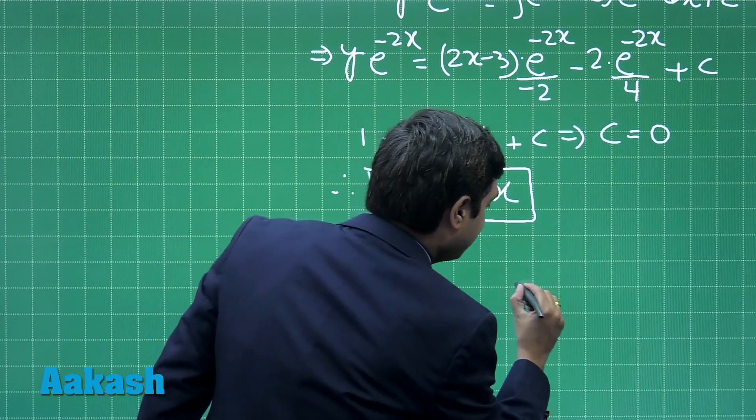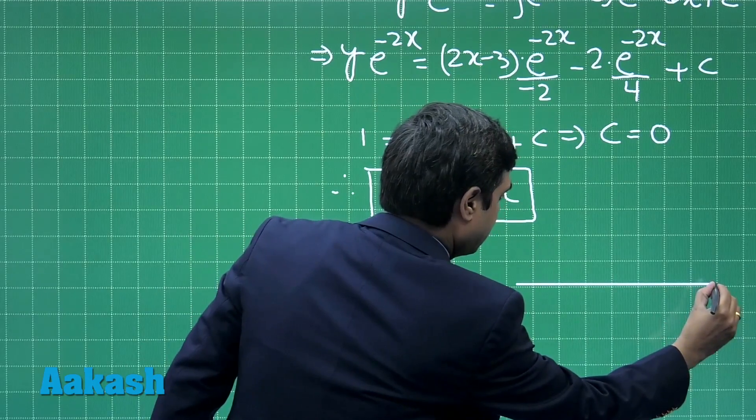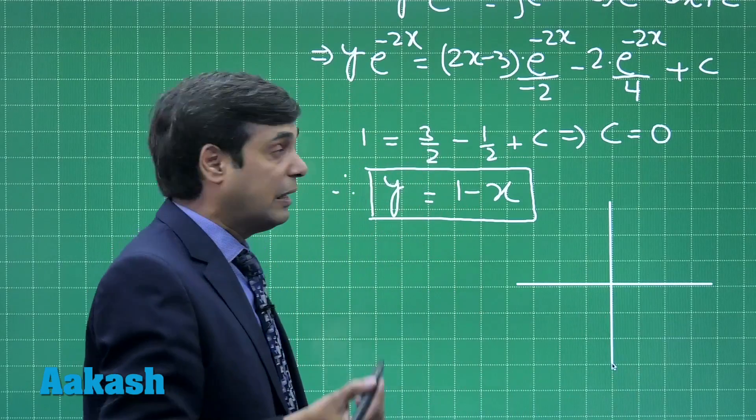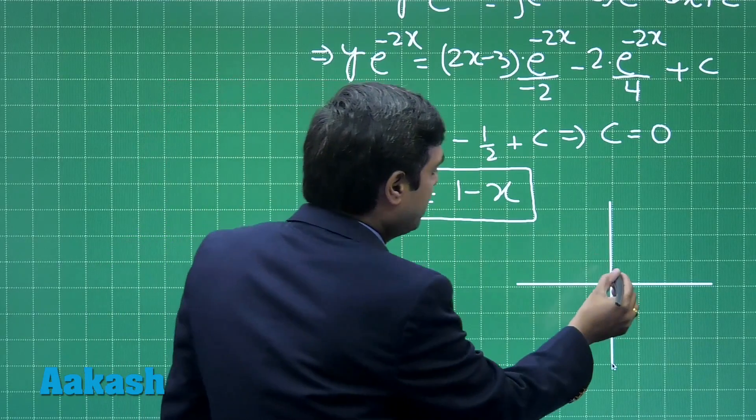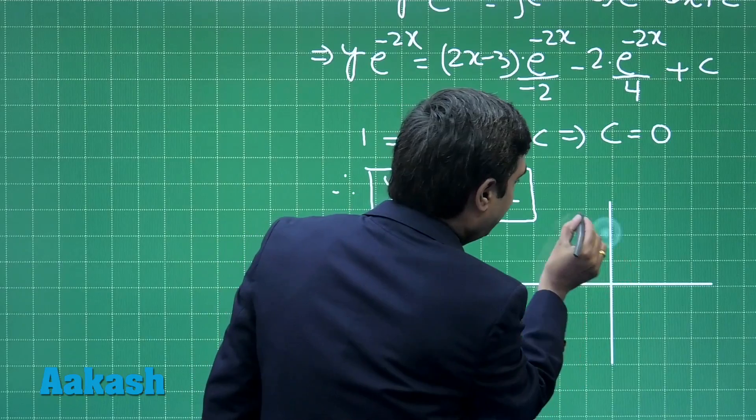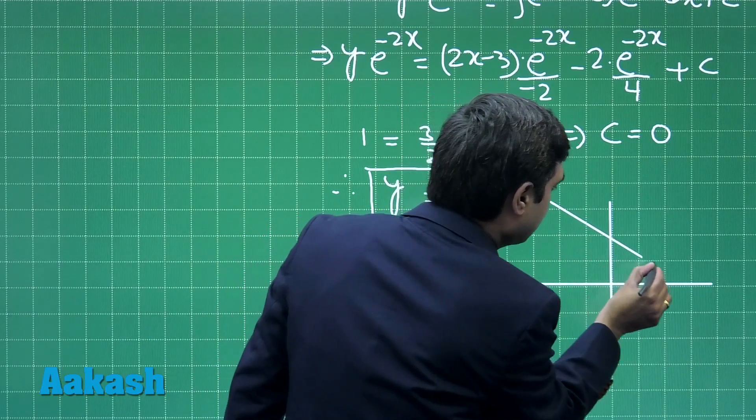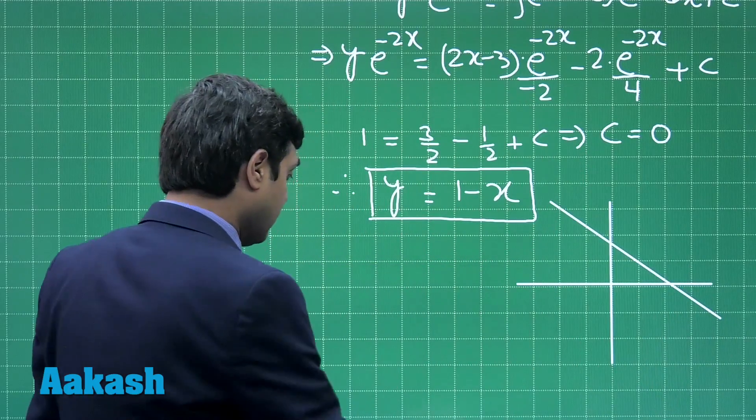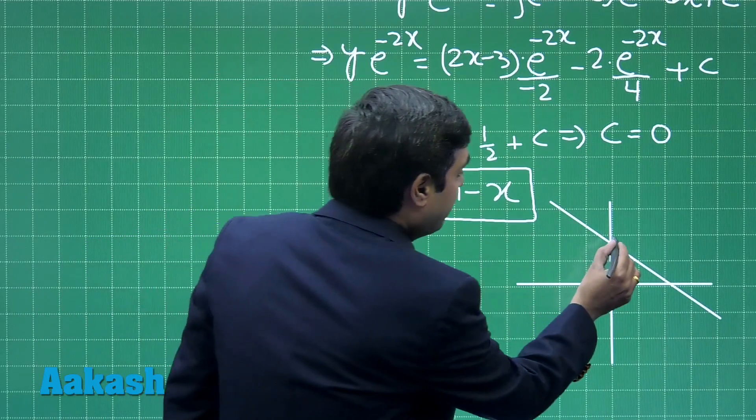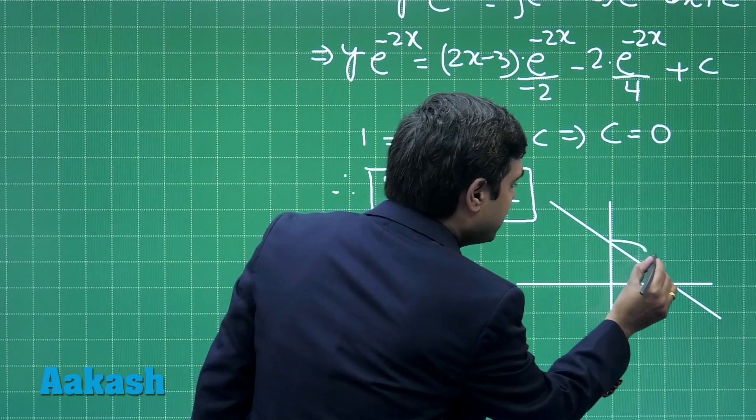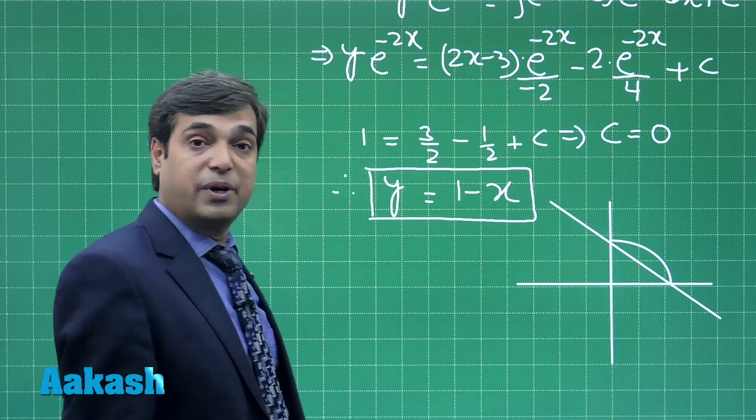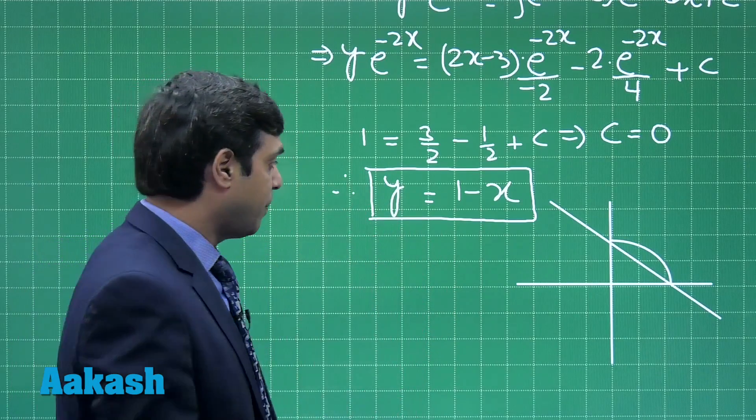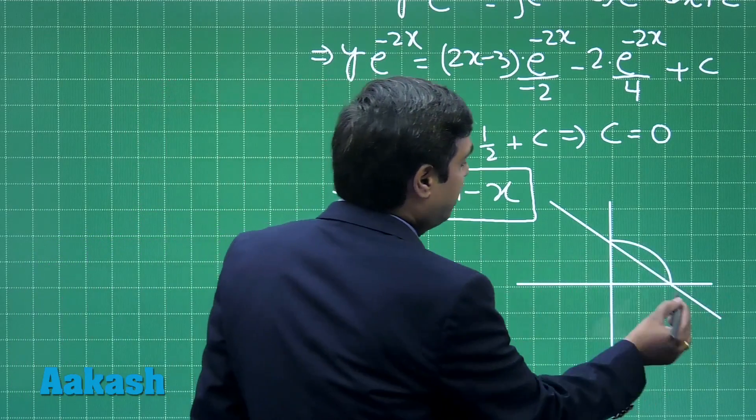Let us draw the coordinate system first. Now the line y equals 1 minus x, let us draw it like this. Next we have to draw this arc in the first quadrant for the circle, because it is y equals √(1 - x²). So this one in the interval 0 to 1.